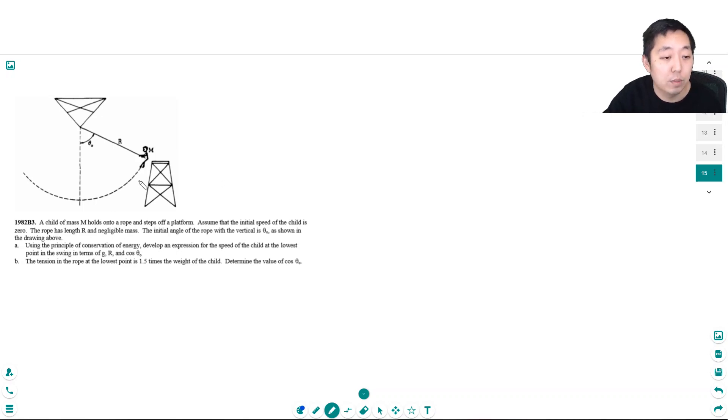So a child of mass M holds onto a rope and steps off a platform. Assume the initial speed of the child is zero. The rope has length r and negligible mass. The initial angle of the rope with the vertical is theta naught, as given by the drawing above.